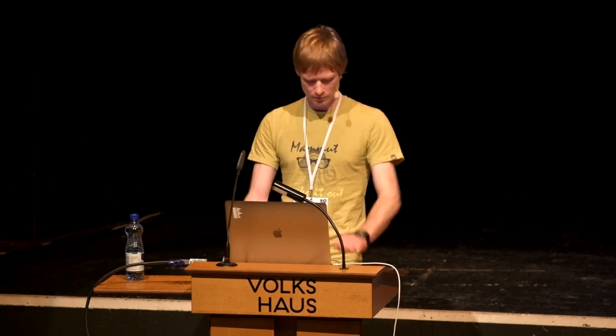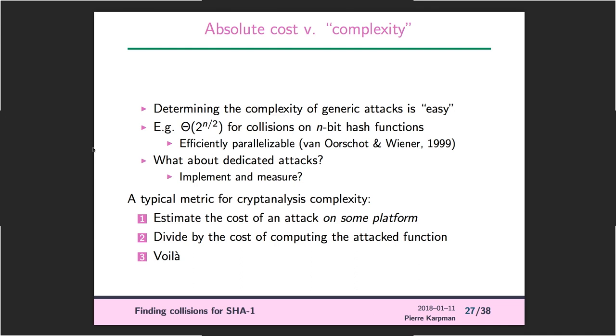Now some words about measuring the complexity of an attack. When I said it was 2 to the 63 SHA-1 computations — what does that actually mean? Generic attacks are kind of easy: we know a generic birthday attack takes about 2 to the n/2 calls and we know how to implement it. But for a dedicated attack, it depends precisely on the attack. The best way is to implement it and measure the cost. For SHA-1 we ran the attack to the end. You then express cost in some metric — you run the attack on a platform with these GPUs and divide the time by the time to compute the raw primitive on the same platform.